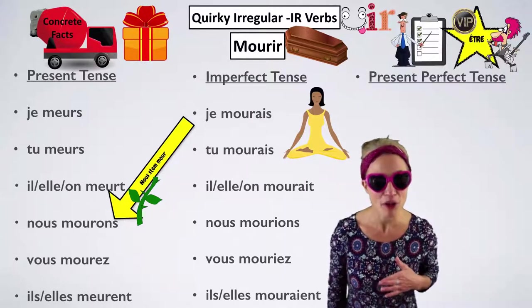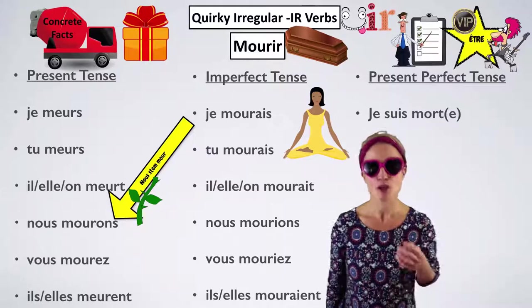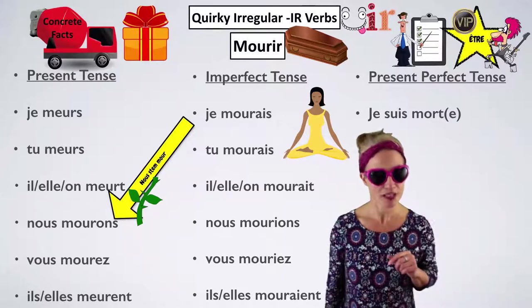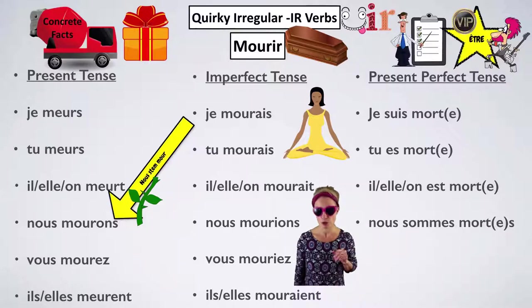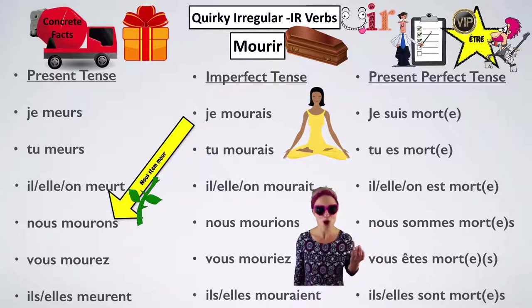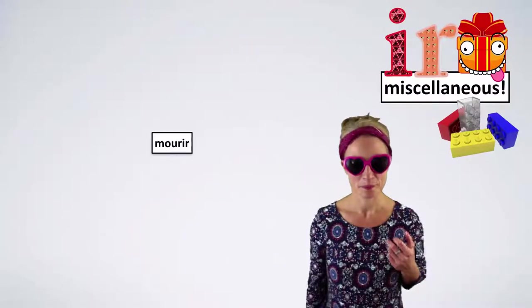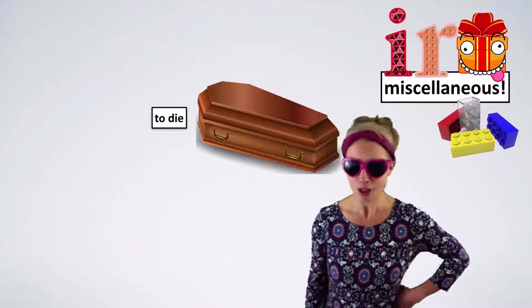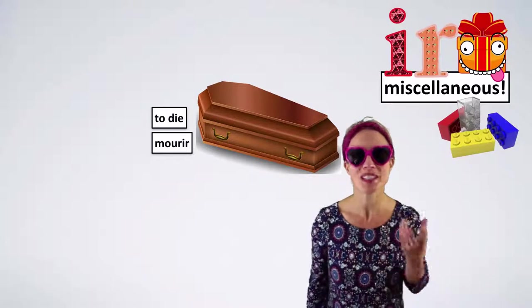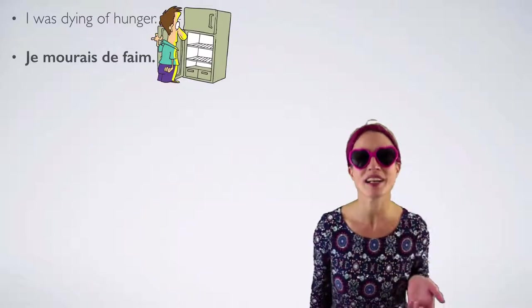And it's another VIP verb, so we have to use être: je suis mort. For feminine, you do hear a difference — je suis morte. Tu es mort ou morte. Il/elle/on est mort ou morte. Nous sommes morts ou mortes. Vous êtes morts ou mortes. Ils ou elles sont morts ou mortes. À vous: what does 'mourir' mean? To die. 'I was dying of hunger' — Je mourais de faim.